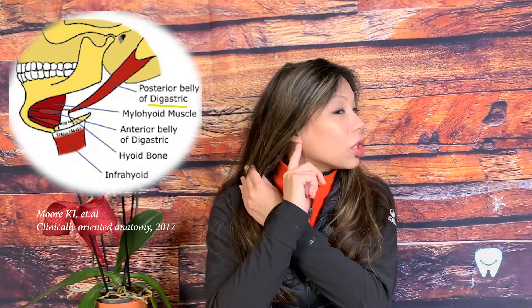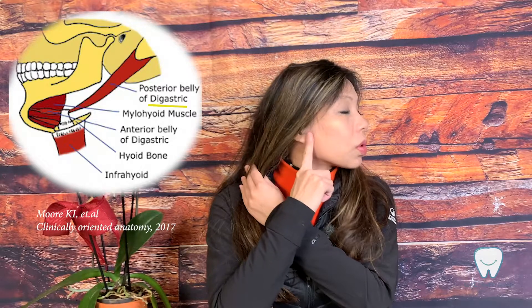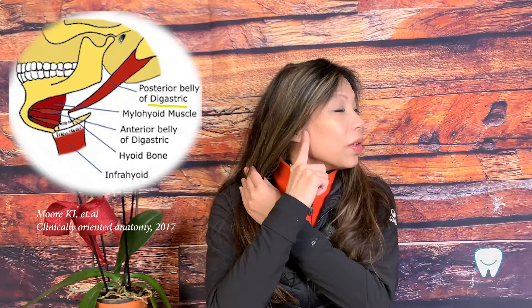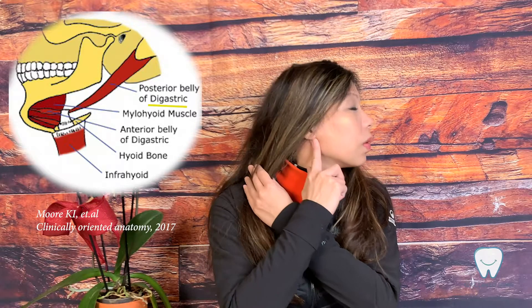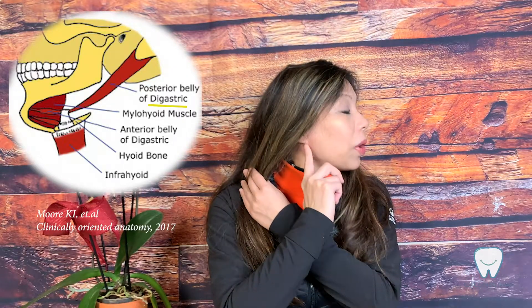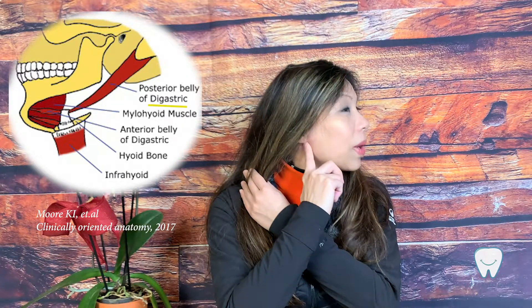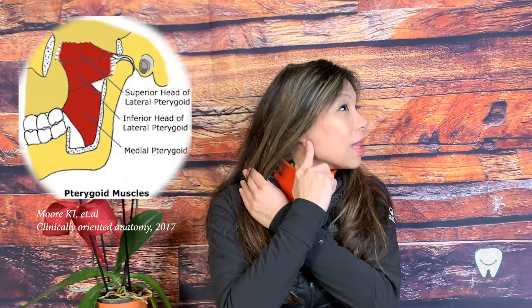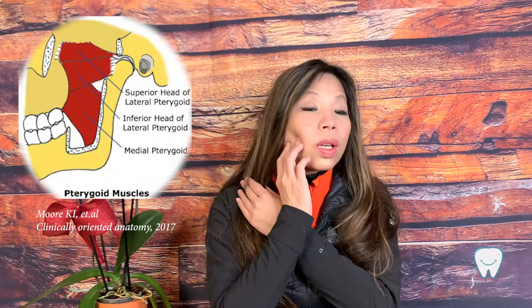The third muscle is the digastric muscle, and it has two divisions. One is in an inner position — if you put your finger right underneath your ear and go backward, you can press and feel some pressure. That muscle can be painful if you have TMD. There is another division located inside the masseter muscle area, over here.